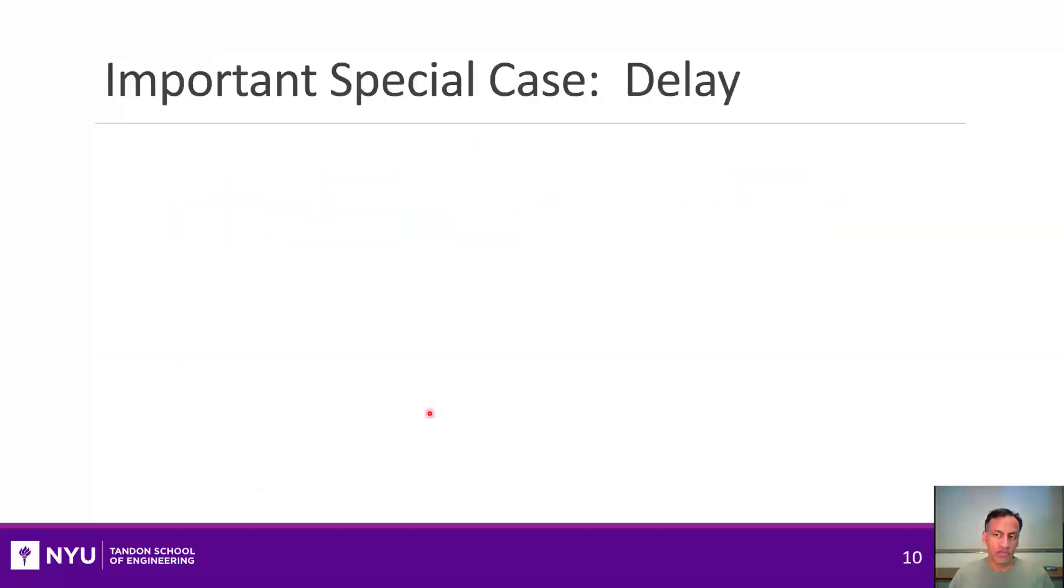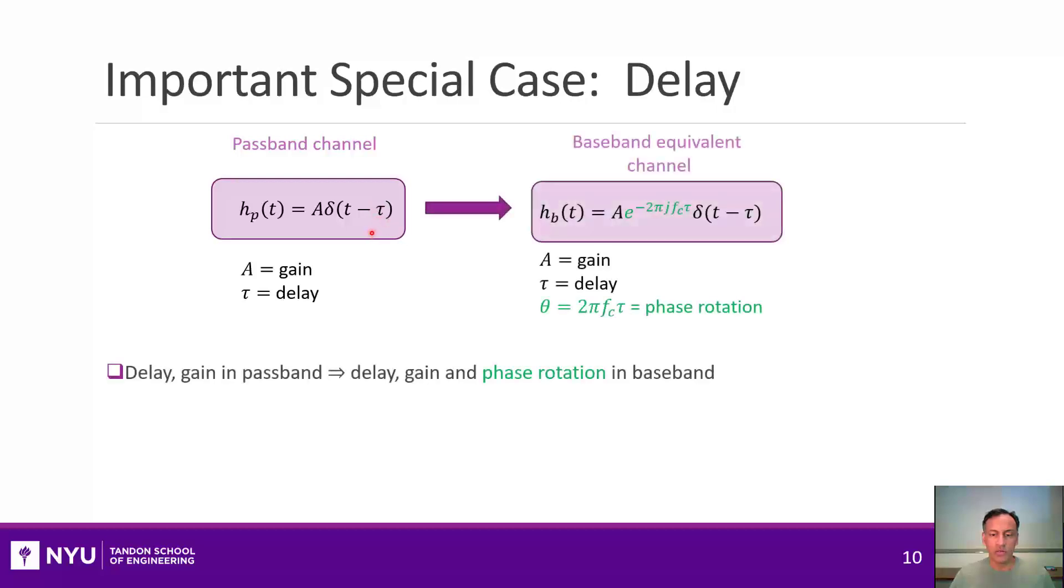All right, and the most important simple case is just looking at the case of a delay. So let's say that in the real passband channel, your frequency response or your impulse response has some gain and some delay. So if you remember, that means the impulse response is a delta function and that delay is tau. So what that means from what we had from the previous slide is that the equivalent baseband channel is also a delay with a tau, but it has a complex phase rotation, and the amount of that phase rotation is dependent on the delay and the carrier frequency.